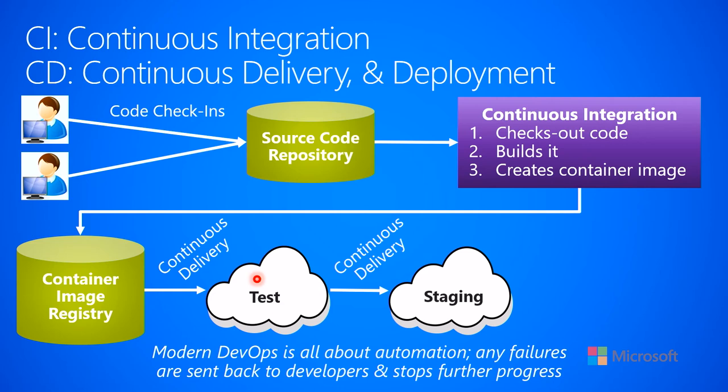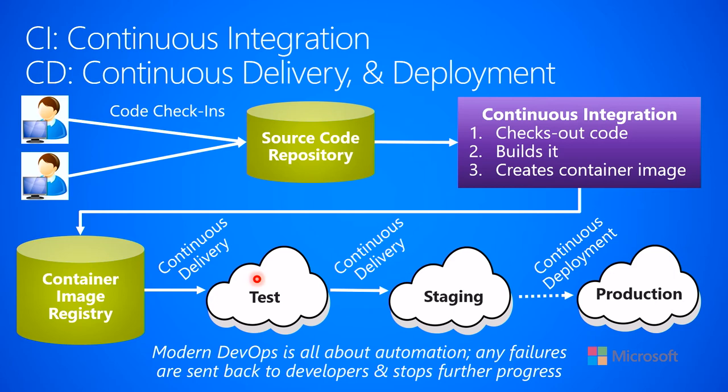If everything goes well in staging — if you feel comfortable enough that your testing suites are good, your performance testing as well as functional testing is all good — you could automate the last step, which is called continuous deployment. That's when you take your container images and update the containers that are in production to have the new images on them. But now you're in production, and this is where all your customers are hitting this, so you have to have a very high degree of confidence in the new version of the code if you're going to set up automated continuous deployment.